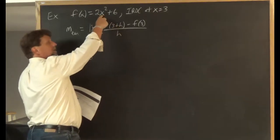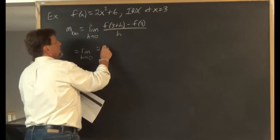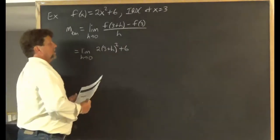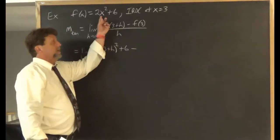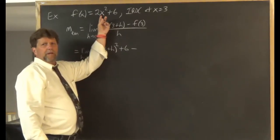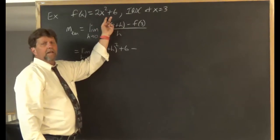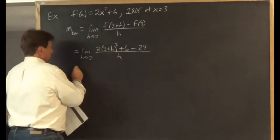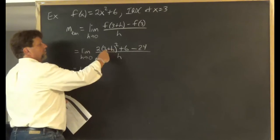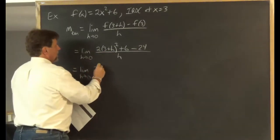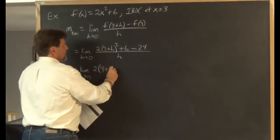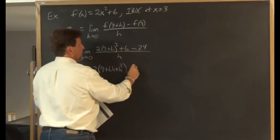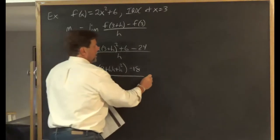Now we have a little bit of algebra to do. f of 3 plus h means 3 plus h comes in for x, giving us 2 times (3 plus h) squared plus 6. That's f of 3 plus h. Minus f of 3: putting 3 in for x, 3 squared is 9, 2 times 9 is 18, 18 plus 6 is 24. Continuing — we should FOIL this out: 3 plus h times 3 plus h is 9 plus 6h plus h squared. And 6 minus 24 is minus 18.